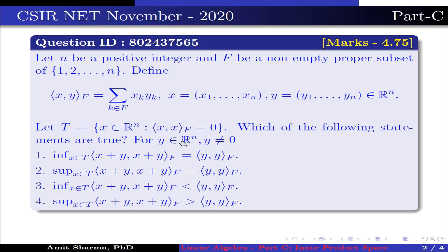For y belonging to R^n and y not equal to 0: Option 1, infimum over x in T of ⟨x+y, x+y⟩ over f equals ⟨y, y⟩ over f. Option 2, supremum over x in T of ⟨x+y, x+y⟩ over f equals ⟨y, y⟩ over f. Option 3, infimum over x in T of ⟨x+y, x+y⟩ over f is less than ⟨y, y⟩ over f. Option 4, supremum over x in T of ⟨x+y, x+y⟩ over f is greater than ⟨y, y⟩ over f.